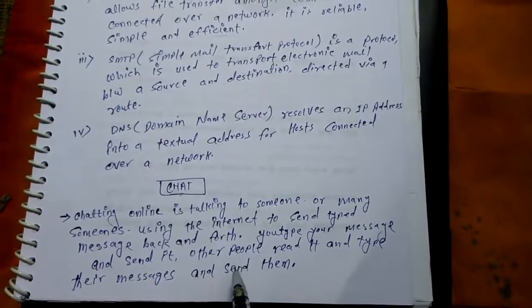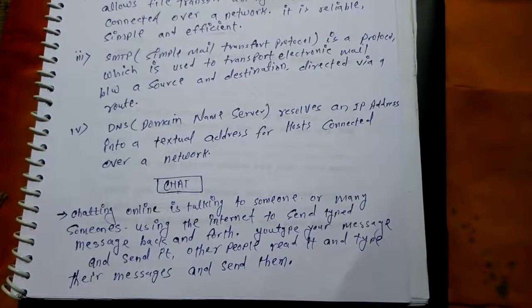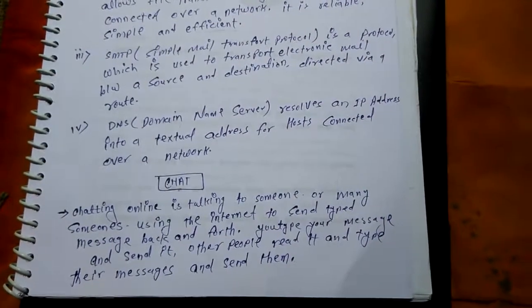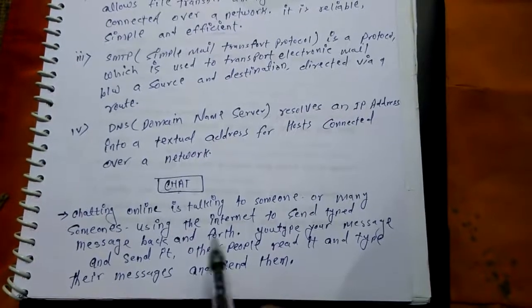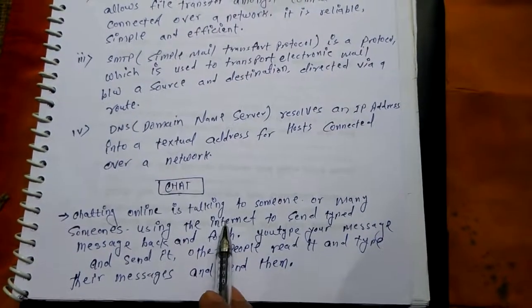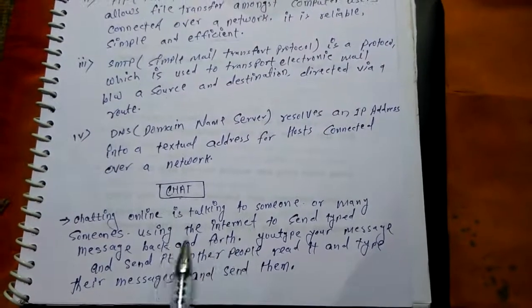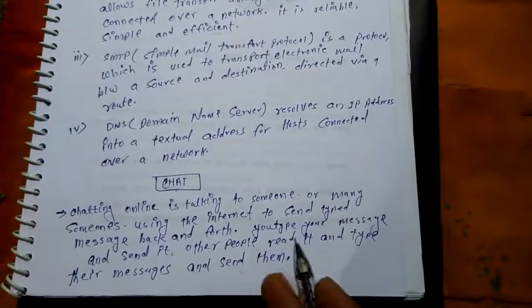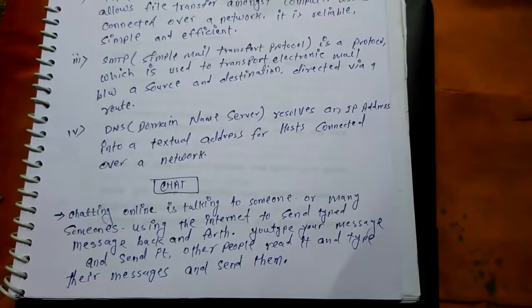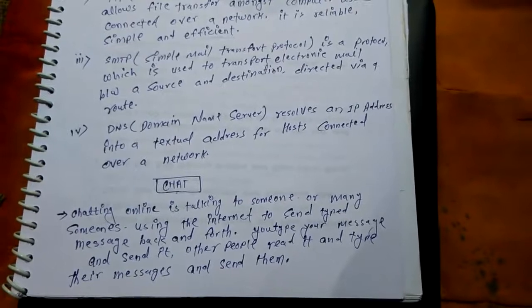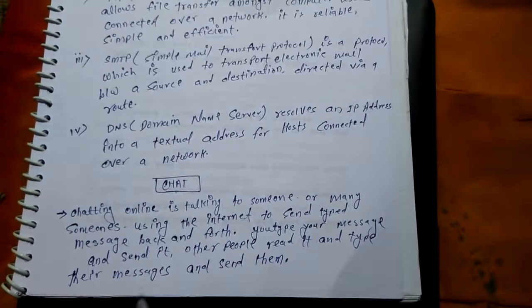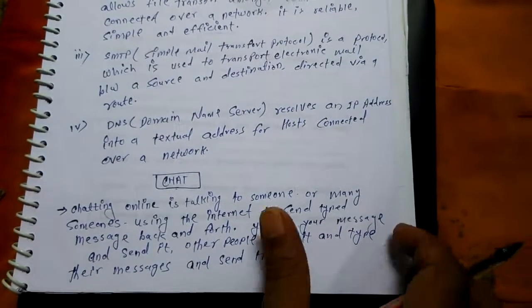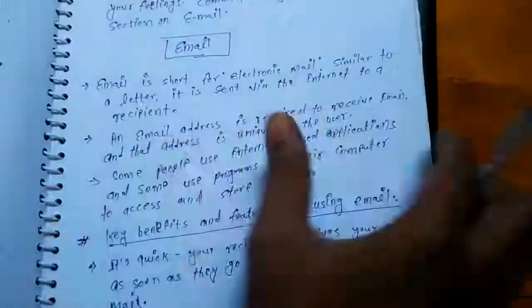So chat जो होता है, वो आप लोगो पाते हो, आप simply chat करते हो — जब हम किसी से communicate करना चाहते हैं, तो जो chatting facility होती है, वो होती है। Chatting में आप online chat भी कर सकते हो, offline chat भी कर सकते हो। Offline जैसे कि आप normal SMS भेजते हैं, वो offline chatting होती है। And online chatting जैसे कि आप internet के through, WhatsApp में chat करते हैं, email पे chat करते हैं, और भी बहुत सारे usual sites से जिसमें आप online chat करते हैं।